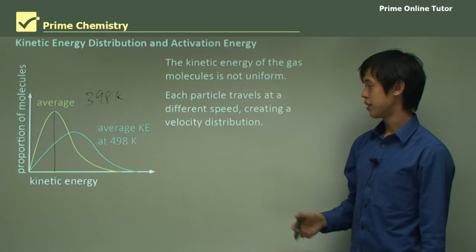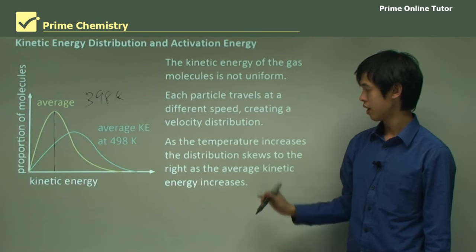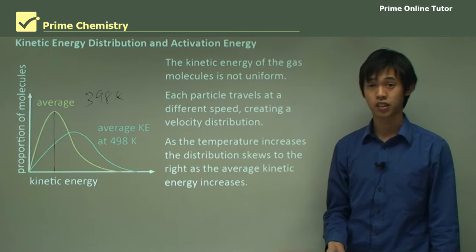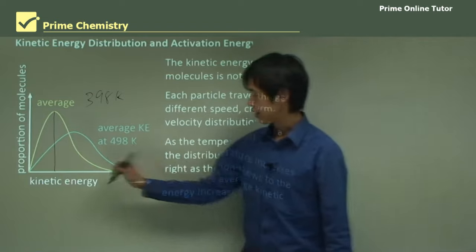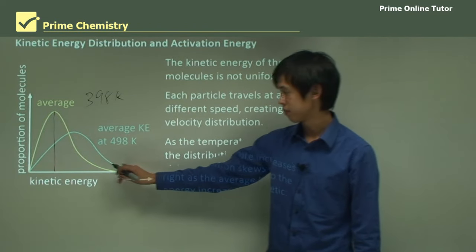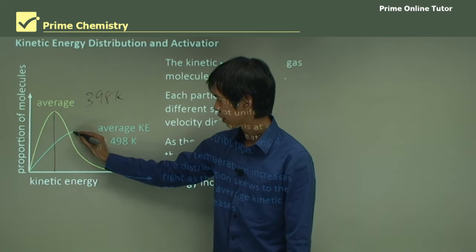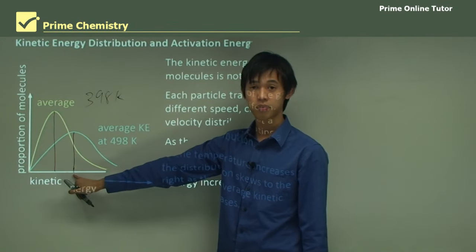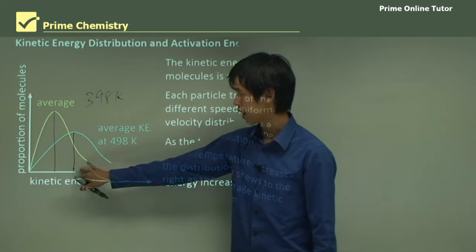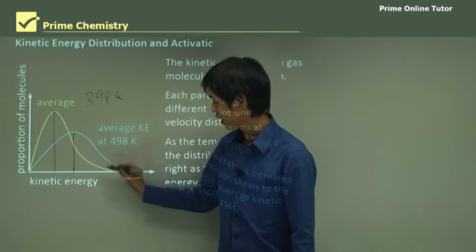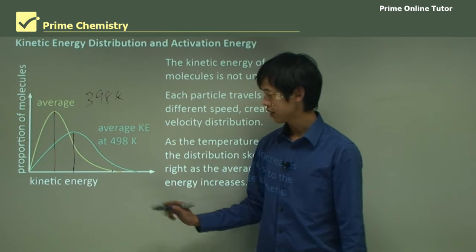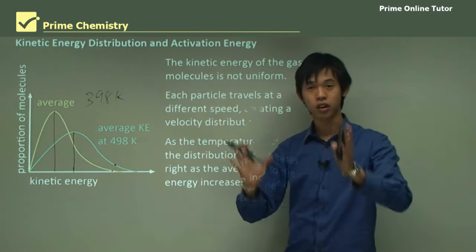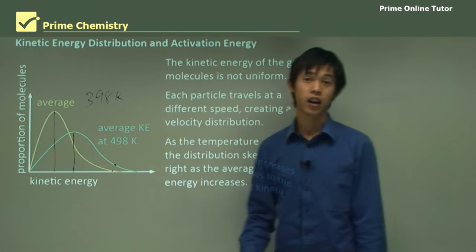Each particle travels at a different speed, creating this velocity distribution. As the temperature increases, the distribution skews to the right as the average kinetic energy increases. If we increase the temperature to 498 Kelvin, it gets a little flatter, but the average shifts to the right — to higher energies. There are now more particles at higher energies; where before there were very few, there are now many more on the blue line.